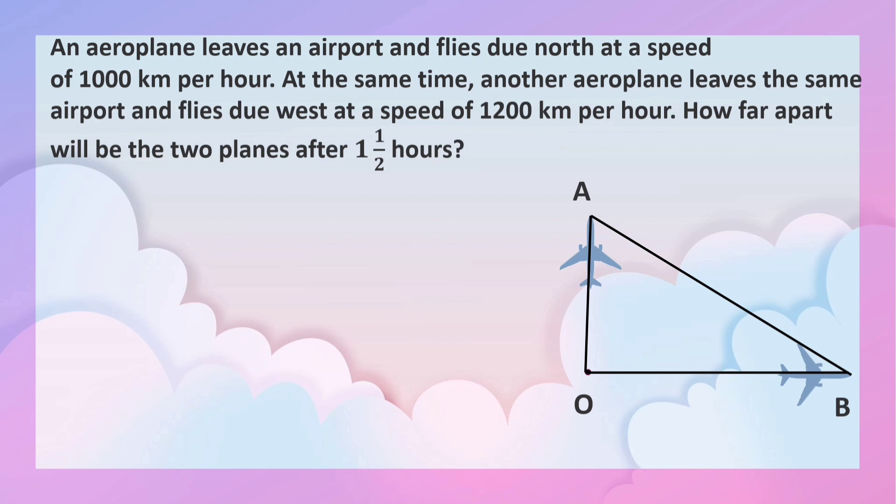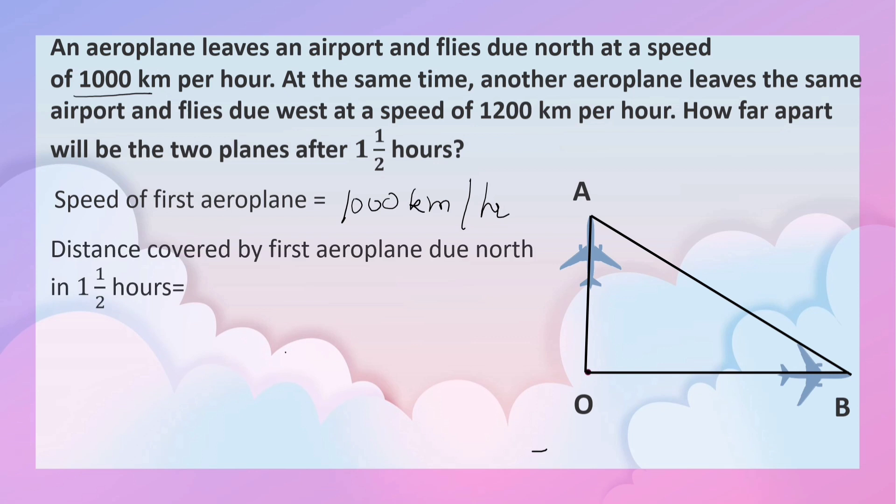Let us begin to solve. The speed of the first aeroplane is 1000 km per hour. It flies due north. The distance covered by the first aeroplane due north in one and a half hours - how can you calculate? Speed times time. Speed is 1000 km per hour, time is one and a half hours. Let us convert it into 3 by 2. 2 ones are 2 plus 1 is 3, so 3 by 2.